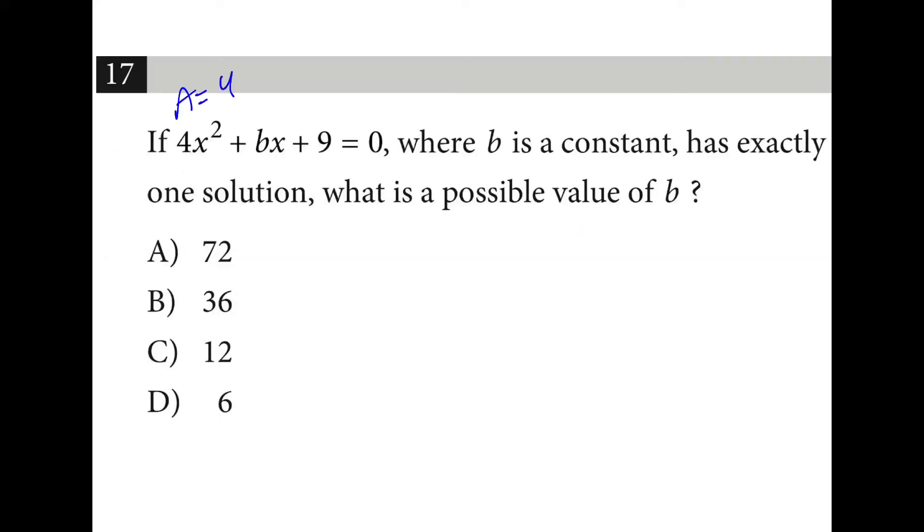So my a value is four, my b value is b, and my c value is nine. And if we have exactly one solution, that means if I use the discriminant part of the quadratic formula, it's going to equal zero.